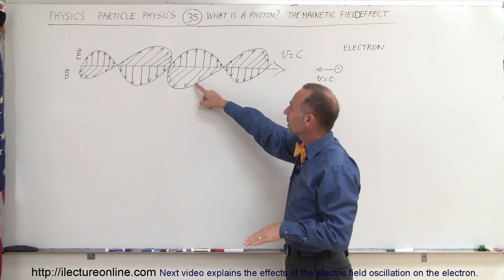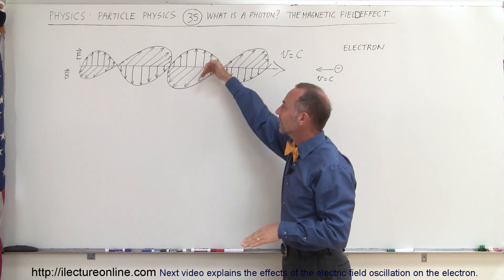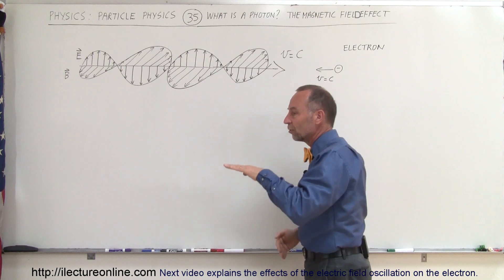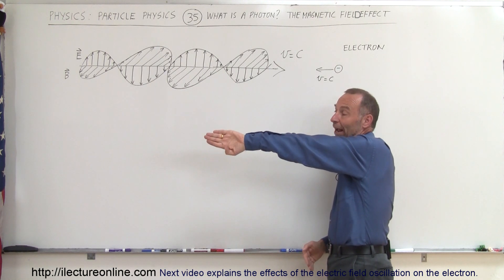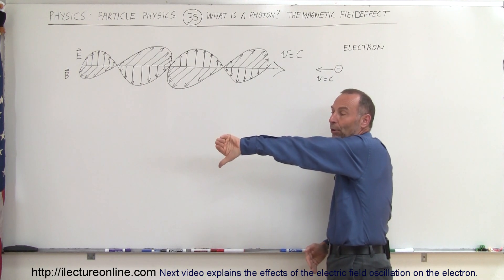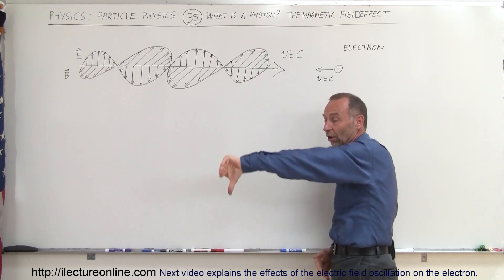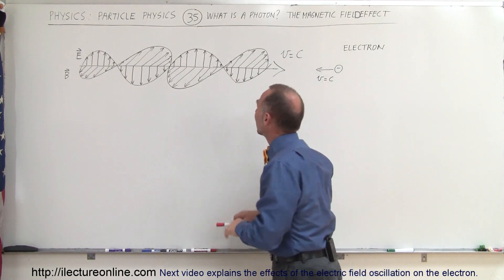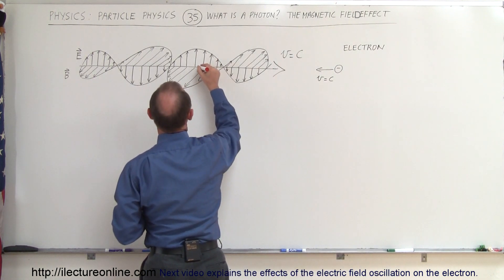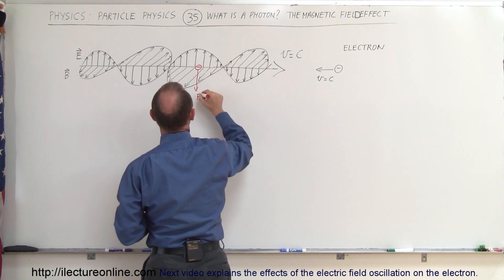Imagine we look at the portion of the photon where the magnetic field is to the left. We point our fingers in the direction of the motion of the electron, turn our hands so we can point in the direction of the magnetic field, and we can see that the force on the electron is downward. So when the electron is at this point, it's experiencing a force downward.